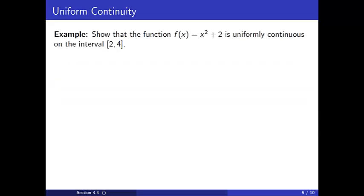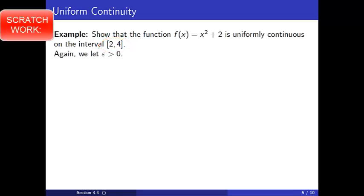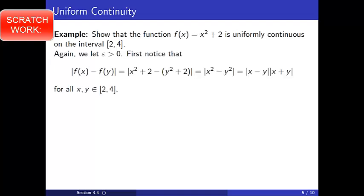For a second example, let's show that the function f(x) = x² + 2 is uniformly continuous on the interval [2, 4]. Here we will see how the domain can affect our proof. We begin by assuming epsilon is positive. Notice that the difference between f(x) and f(y) equals |x² + 2 − (y² + 2)|, which equals |x² − y²|. This equals the product |x − y| · |x + y|, and this holds for all x and y in the interval [2, 4].